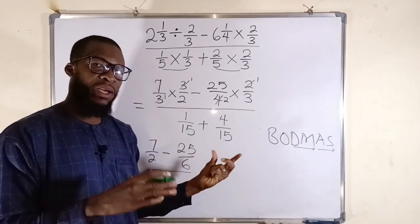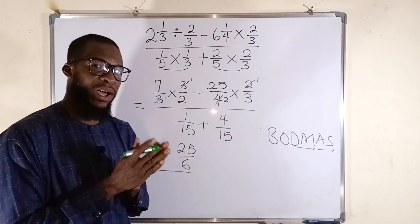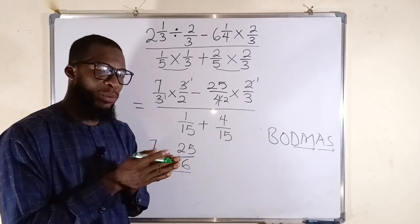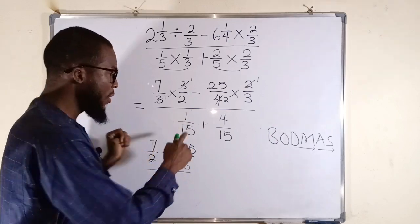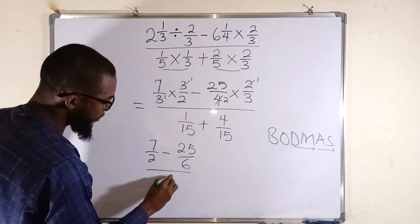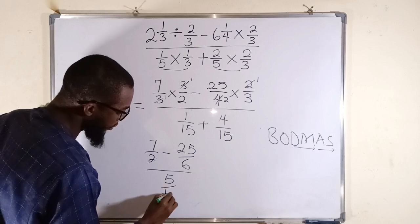Coming down here, whenever you're adding or subtracting fractions that have equal denominators, you can always add or subtract the numerators. 1 plus 4 is 5. Divide by 15.